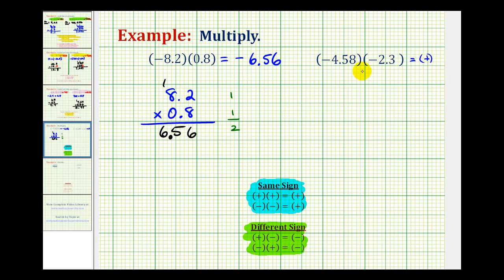So knowing the product's going to be positive, we're going to determine this product, ignoring the signs. So we'll have 4.58 times 2.3.